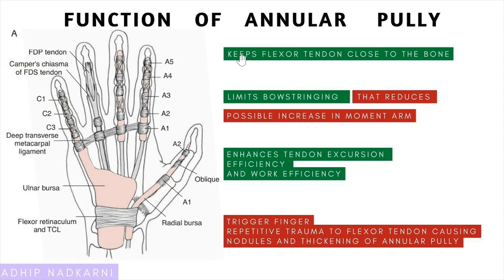Now let's look at the function of the annular pulley. Basically, as the tendon passes through the finger, the pulley keeps the tendon in place by putting rings around it. The key functions are: it keeps the flexor tendon close to the bone, and it limits bow stringing.